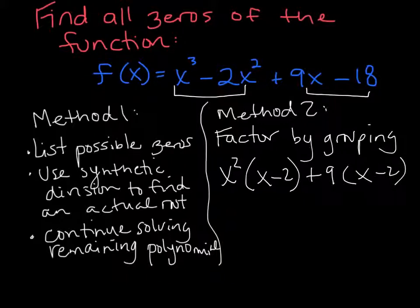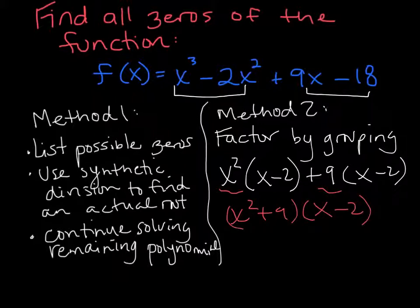So now when I combine my x squared plus 9, my coefficients, and I leave my like term, my x minus 2 by itself. So so far I know that f of x equals x squared plus 9 times x minus 2.